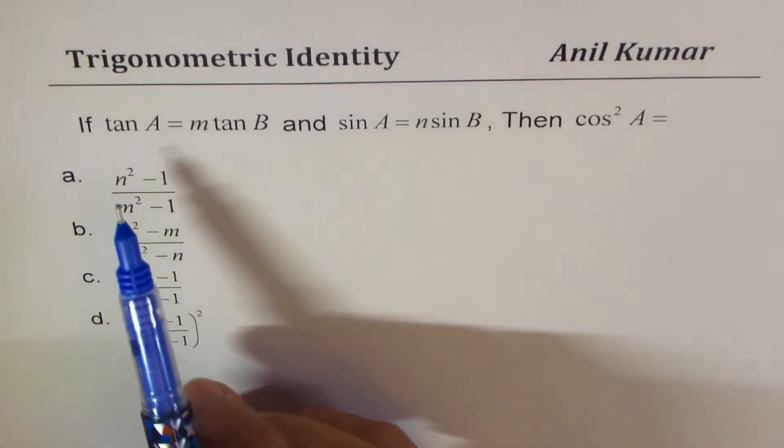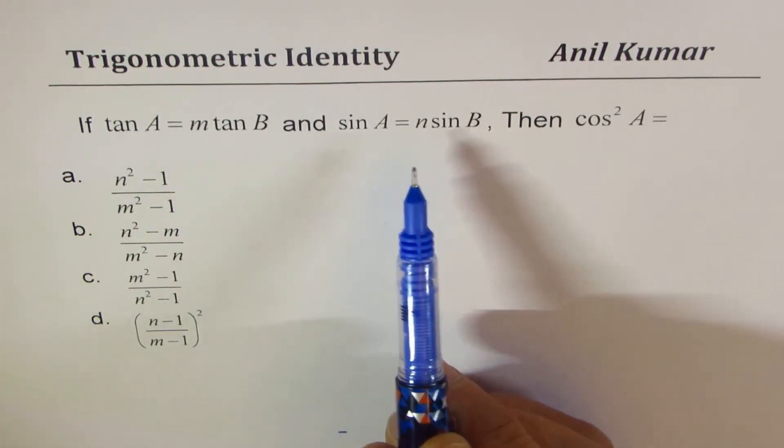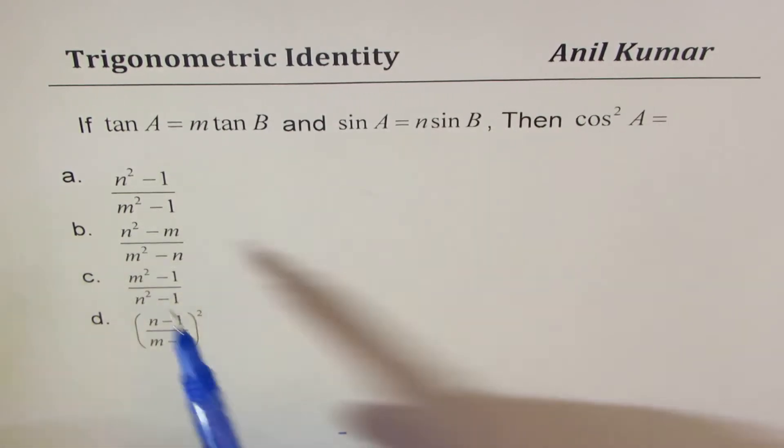The question here is tan A equals m times tan B and sin A equals n times sin B. Then cos square A is equal to what? So we have four choices. You need to select the right one. You can pause the video, answer the question, and then look into my suggestions.